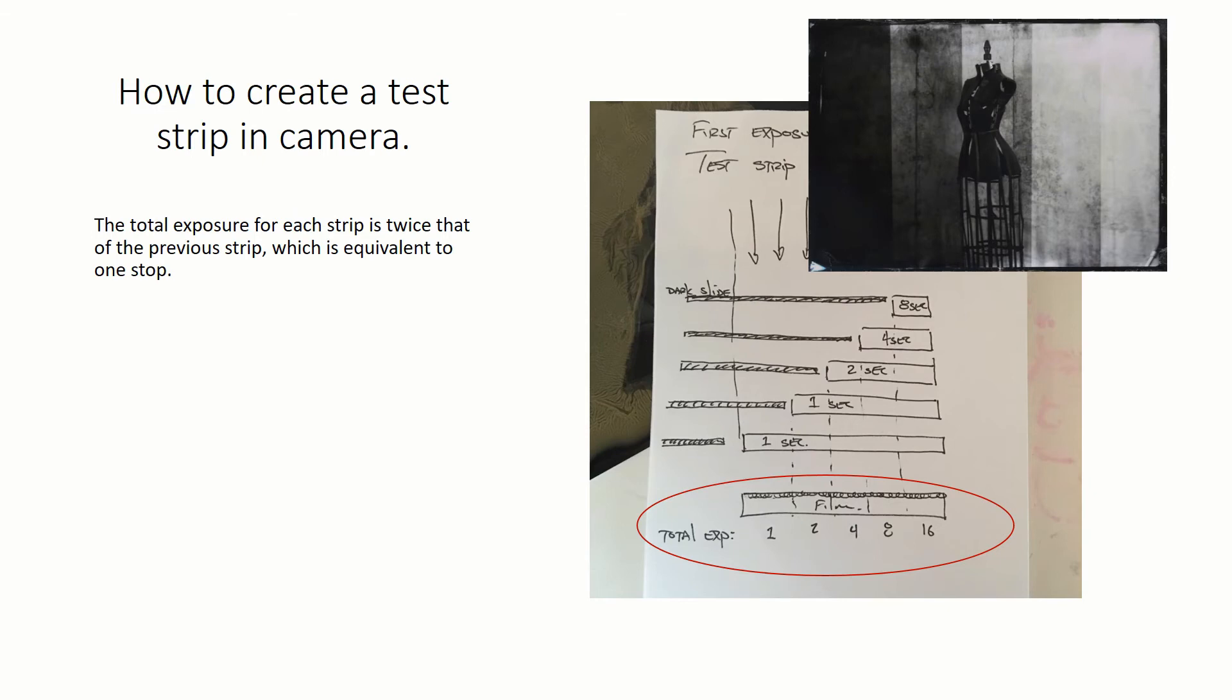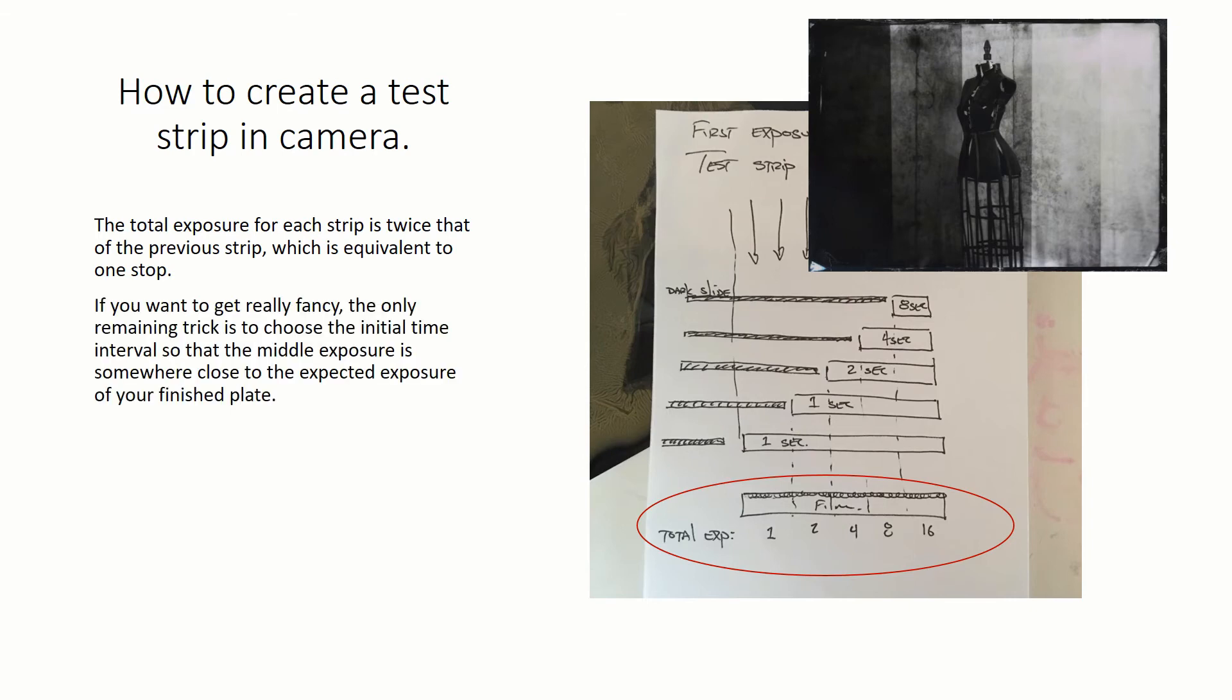The total exposure for each strip is twice that of the previous strip, which is equivalent to one stop. If you want to get really fancy, the only remaining trick is to choose the initial time interval so that the middle exposure is somewhere close to the expected exposure of your finished plate.